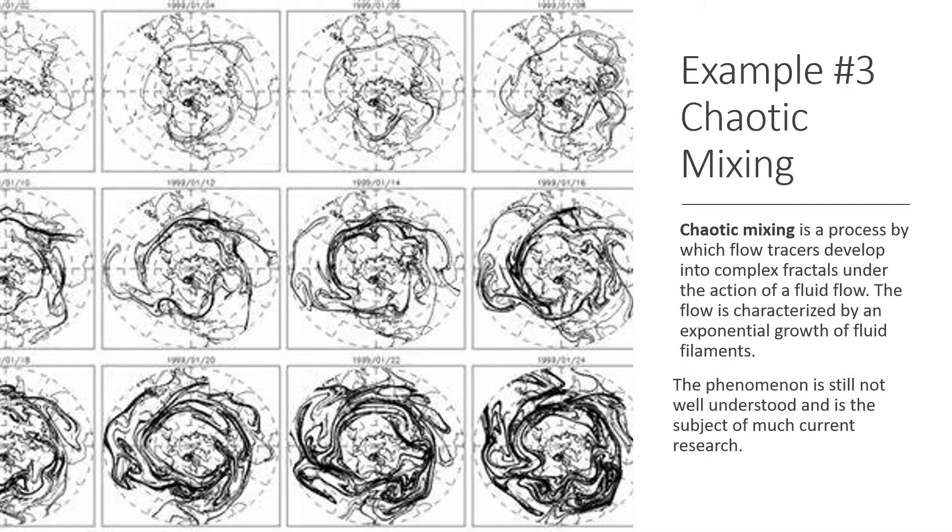The third example of transport phenomena is chaotic mixing, which is a process by which flow tracers develop into complex fractals under the action of a fluid flow. If you are unfamiliar with flow tracers, a flow tracer is any fluid property used to track flow. The concentration of a chemical compound in a fluid can be used as a chemical tracer, and characteristics such as temperature are physical tracers. So it's basically just anything used to track the flow of a fluid.